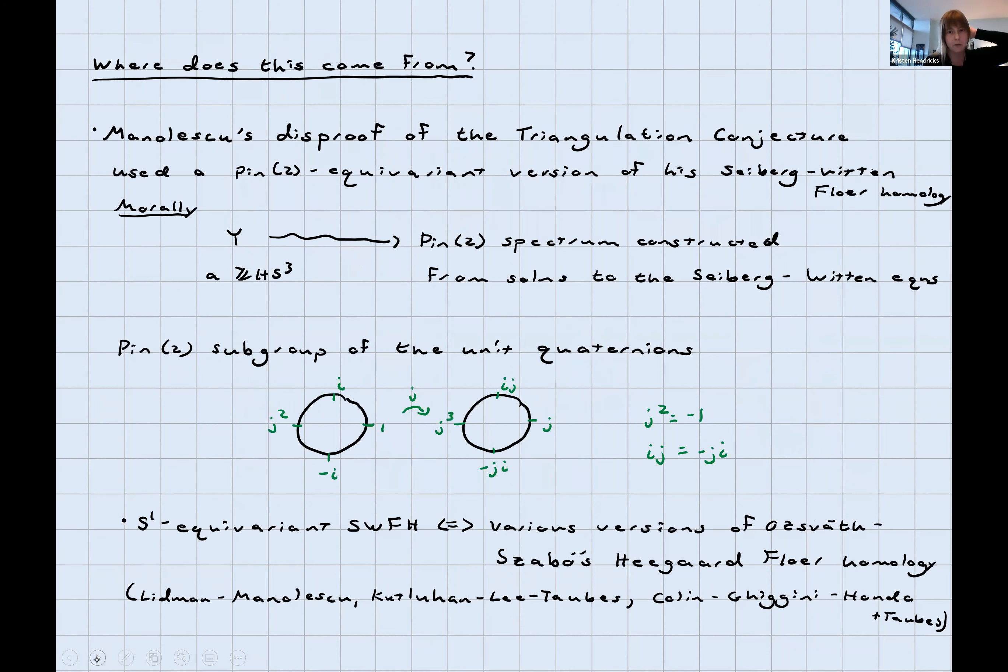I mentioned Ciprian's disproof of the triangulation conjecture earlier. What tools does that use? That uses a pin-2 equivariant version of his invariant for three-manifolds, Seiberg-Witten Floer homology. If you've got an integer homology sphere, you associate to it some pin-2 spectrum constructed from solutions to the Seiberg-Witten equations on the manifold. Here pin-2 is a subgroup of the unit quaternions that looks like two copies of the complex circle. I've drawn them next to each other, but they're actually linked. They form a Hopf link. We've got a map j between the two copies of the circle such that j squared is minus one, and ij is minus ji. We see this as an order four subgroup generated by j inside of it.